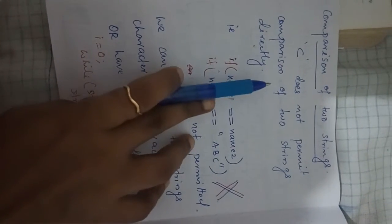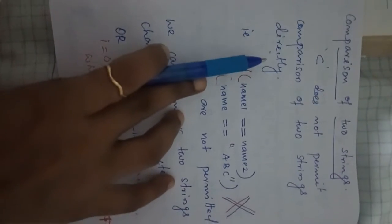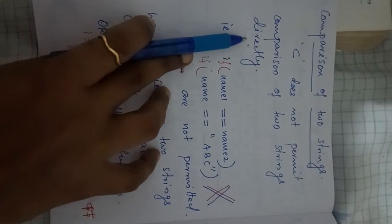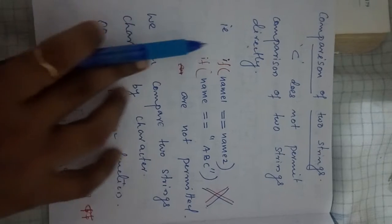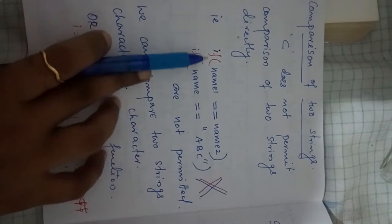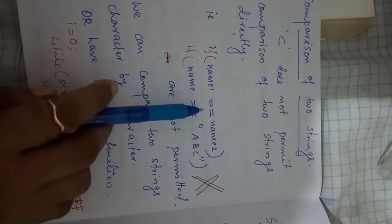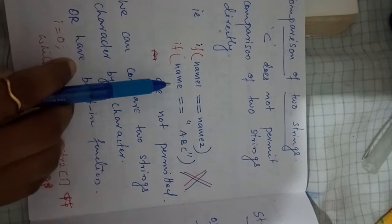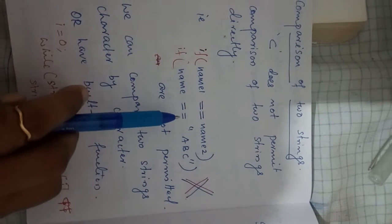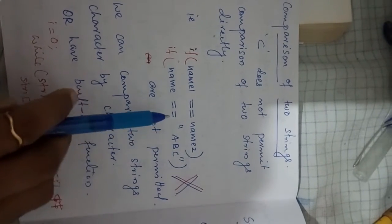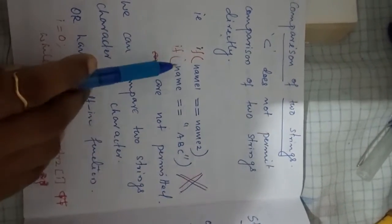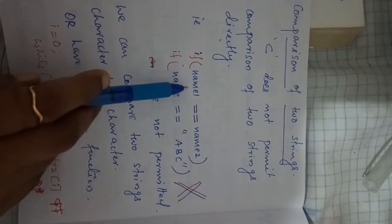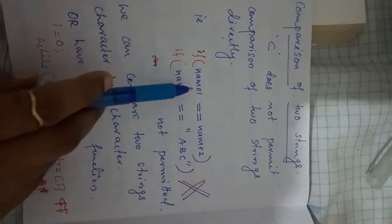C does not permit comparison of two strings directly. Direct comparison of two strings is not allowed in C. That is, statements like name1 equal to name2, or name equal to string abc, are not valid in C. Here, name and name1 are character arrays, that is, string variables.